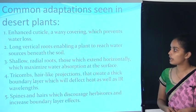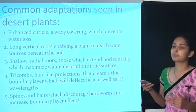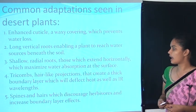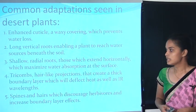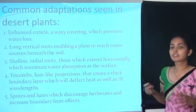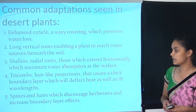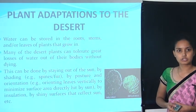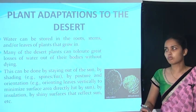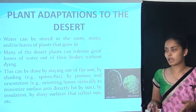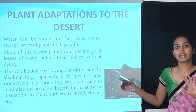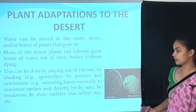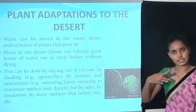Common adaptations in desert plants include: enhanced cuticle covering which prevents water loss; long vertical roots to reach water sources beneath the soil; shallow radial roots extending horizontally to maximize water absorption at the surface; trichomes — hair-like projections that create a thick boundary layer deflecting heat and infrared radiation; and spines and hairs which discourage herbivores. Water can be stored in roots and stems. Many desert plants can tolerate great losses of water, and their leaves are converted into thorns to reduce water loss through transpiration.